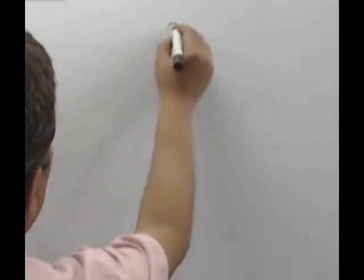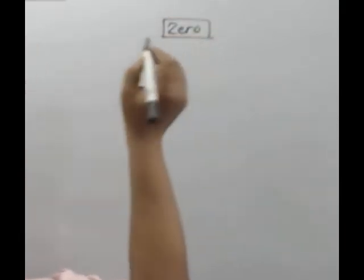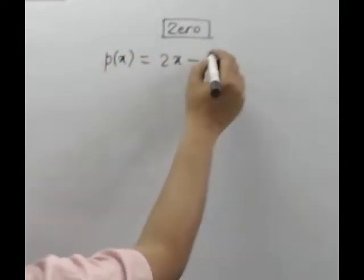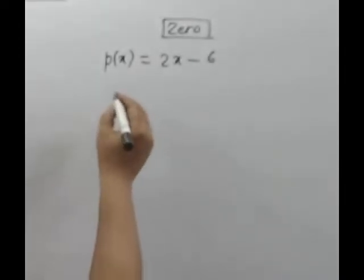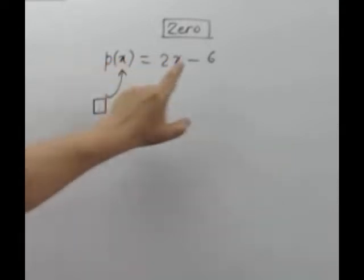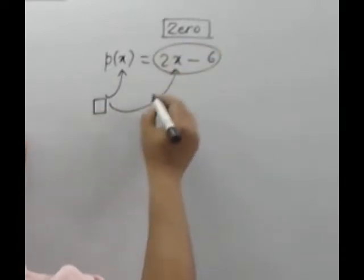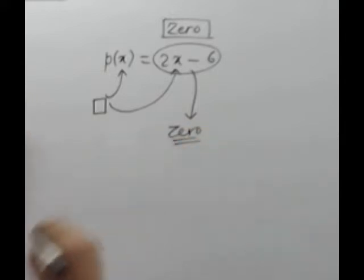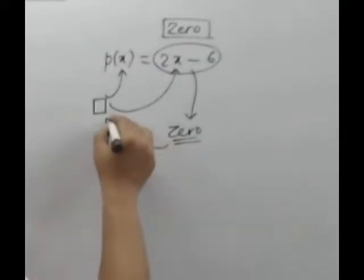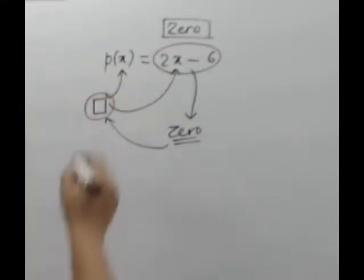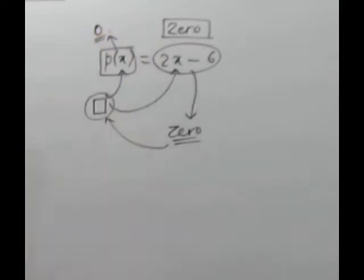अगर हम लोग एक concept के रूप में देखें, तो zero का concept यह था कि अगर कोई भी एक polynomial दिया हुआ हो, तो x का वो value जिसको x के जगह पर रखने से यह पूरा का पूरा polynomial 0 हो जाए, तो x के उसी value को हम लोग zero of the polynomial बोलते हैं। मतलब यह हुआ, zero अगर निकालना है, तो हमें इस polynomial को 0 बनाना होगा और उसके बाद x का मान निकालना होगा। यह concept है।